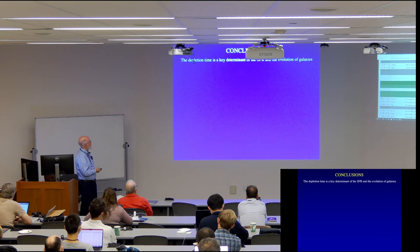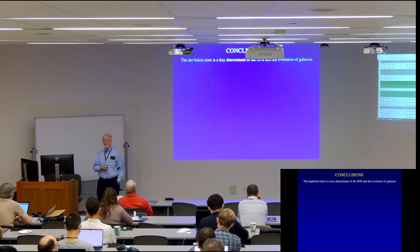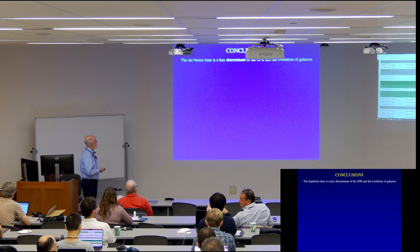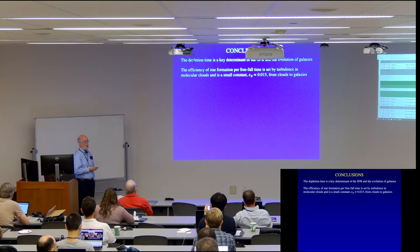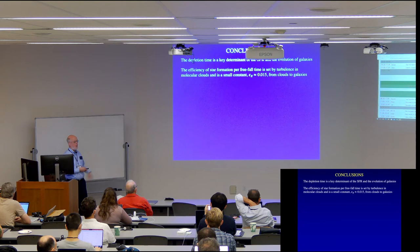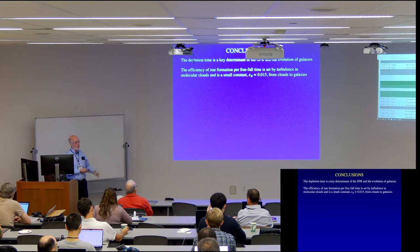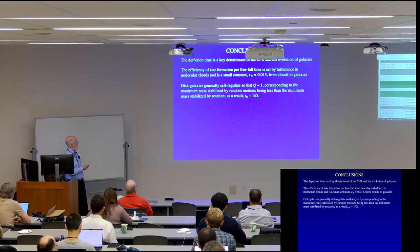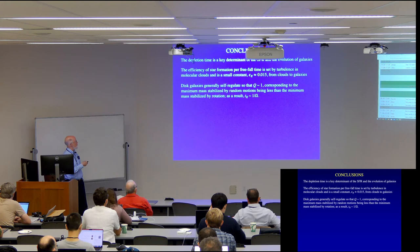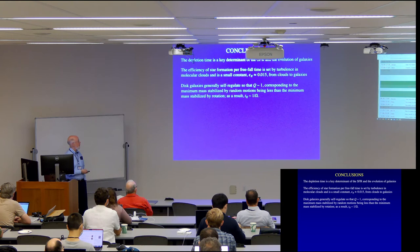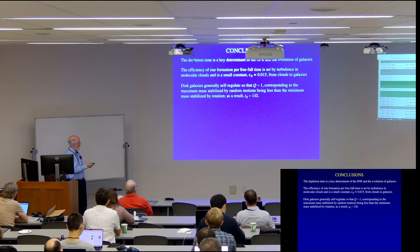So in conclusion, as I've tried to emphasize, the depletion time is really a key parameter in both trying to understand the star formation rate and the evolution of galaxies. The efficiency of the star formation rate per freefall time is set by the turbulence in molecular clouds, and it's a small constant all the way from giant molecular clouds in any galaxy, all the way up to whole galaxies, including starburst galaxies. This galaxy generally self-regulates so that Q is of order of unity. Corresponding, that corresponds to the maximum mass being stabilized by random motions being a little bit less than the minimum mass, stabilized by rotation.